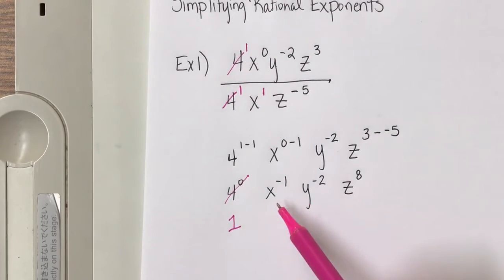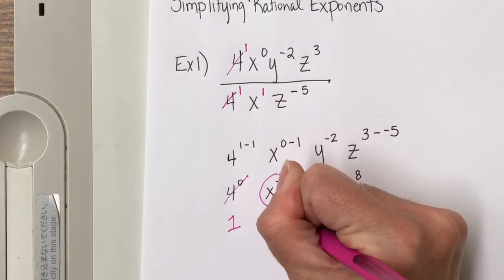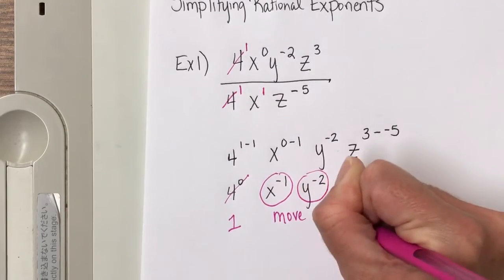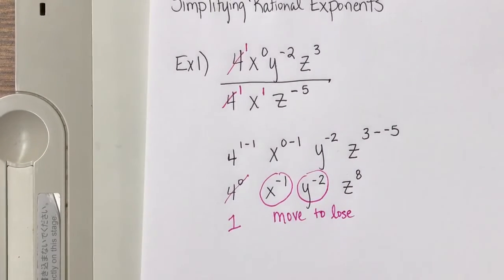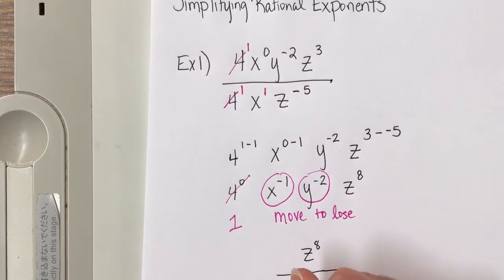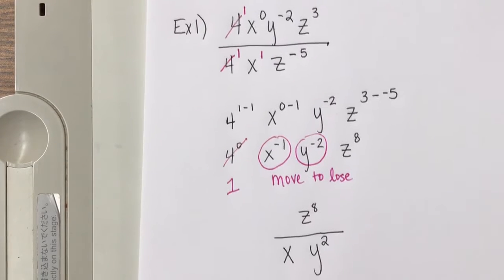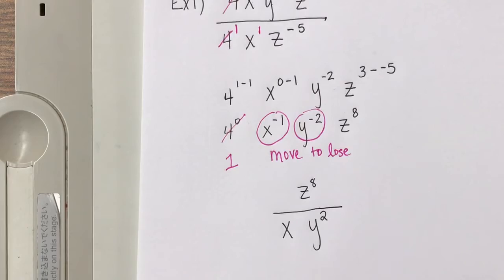So then I'll look at this x to the negative 1. Are we allowed to have negative exponents? No. So the rule is move it to lose it. In this case, I'm going to move both of these because they both are negative exponents. So the only thing that's not going to move is the z to the 8, so it's going to stay on top. And then the bottom, I'm going to have x, y squared. So then ask yourself, is this simplified? And the answer is yes.